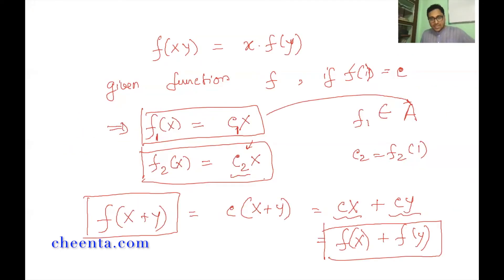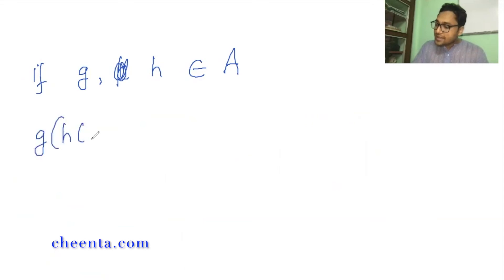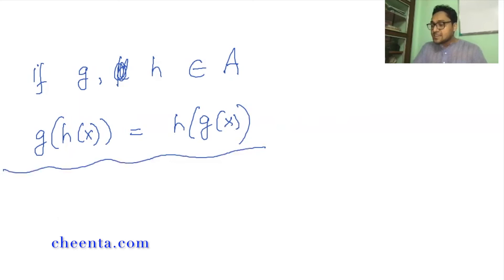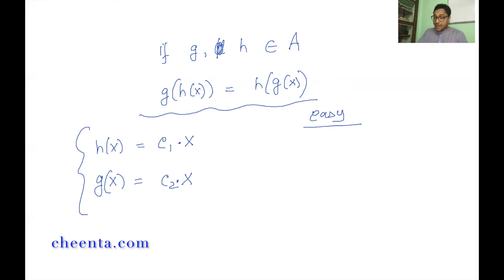There is a second part of this problem. If g and h both belong to A — so there are two such functions satisfying these properties — show that g(h(x)) = h(g(x)). This part is really easy. Here's a hint: suppose h(x) = c₁·x and g(x) = c₂·x. We know both h and g are in the set A and will have this form, and you can use this to prove the commutativity of composition.